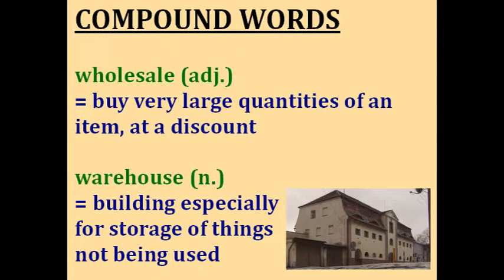Wholesale. Sometimes companies buy very large quantities of items from a manufacturer in order to get a discount — for example, they'll buy 10,000 pairs of shoes at a reduced price. This is called buying wholesale because they're going to sell those shoes for a profit. Now if they buy so many items, they need to store them somewhere, so the items can be stored in a warehouse — a building used especially for storage of things not currently in use.